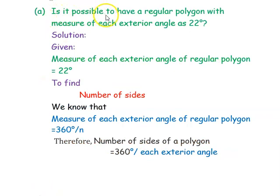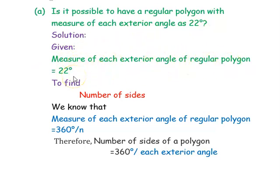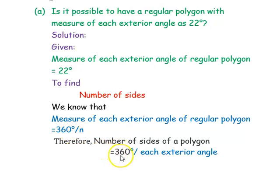Next question: is it possible to have a regular polygon with measure of each exterior angle as 22 degrees? The given measure of each exterior angle of a regular polygon is 22 degrees. We want to find the number of sides so we can decide whether it is possible to have such a regular polygon. We know that each exterior angle of a regular polygon equals 360 degrees divided by n, where n is the number of sides. So n equals 360 degrees divided by each exterior angle.